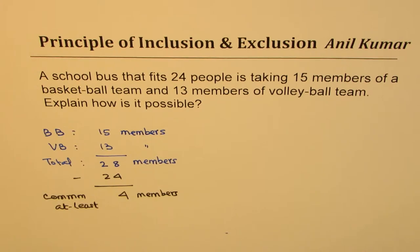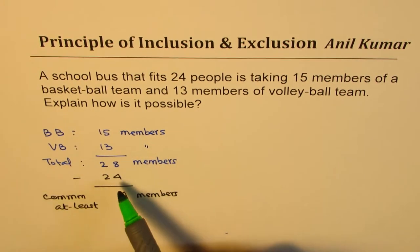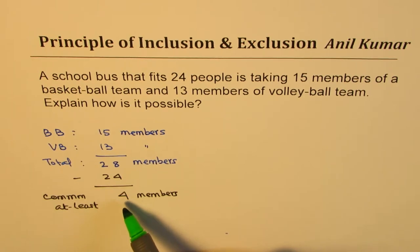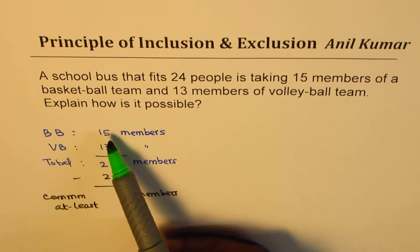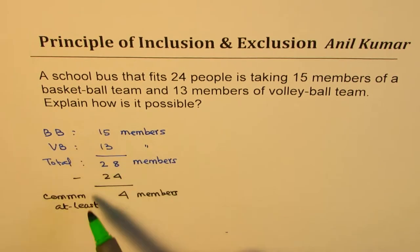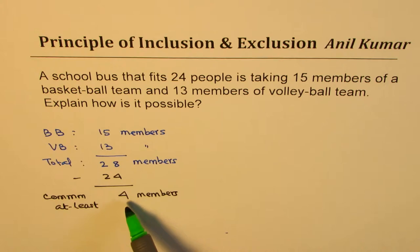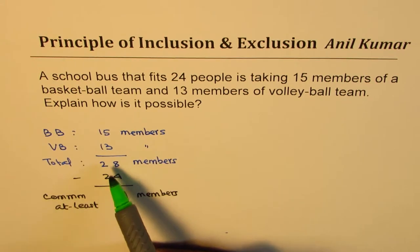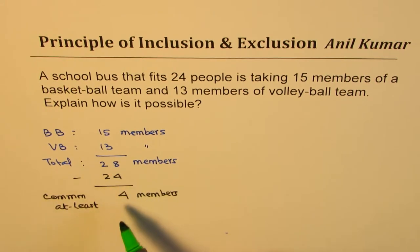That is the principle of inclusion and exclusion. We actually included these common members while counting both teams, so we counted them twice. So from the total, they should be excluded.